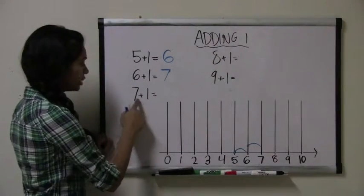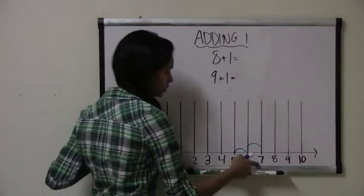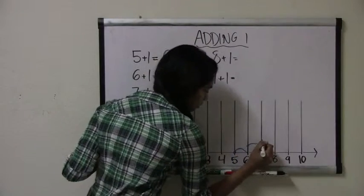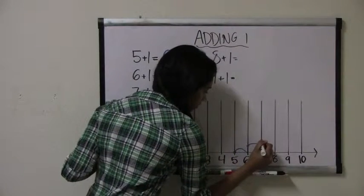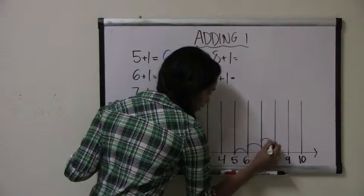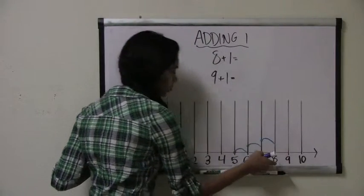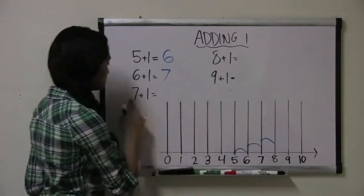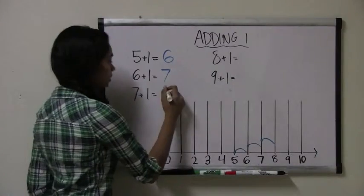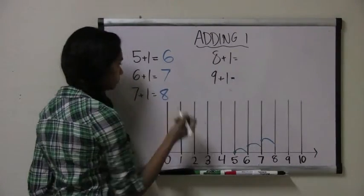Let's try 7 plus 1. This time we start with the number 7 and jump one spot. And we land on the number 8. So 7 plus 1 equals 8.